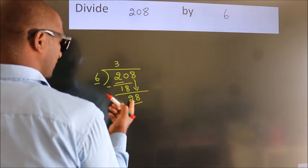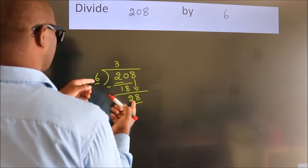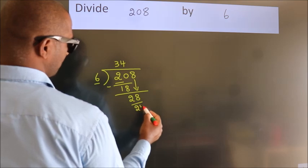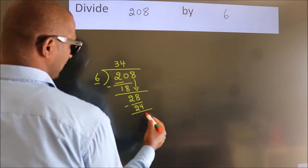So, 28. A number close to 28 in the 6 table is 6 times 4 equals 24. Now we subtract. We get 4.